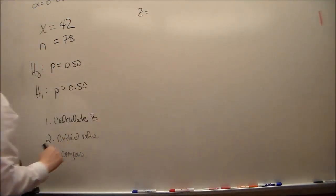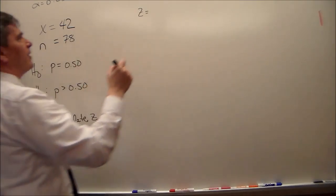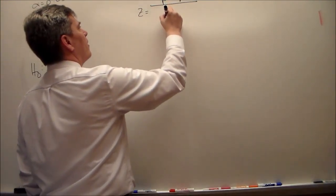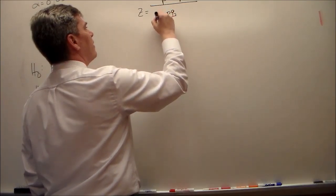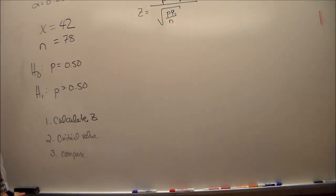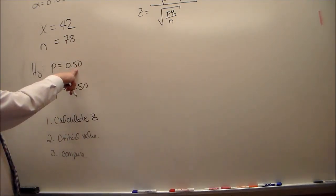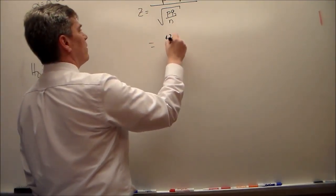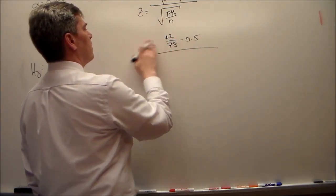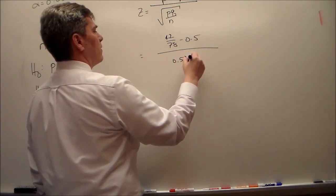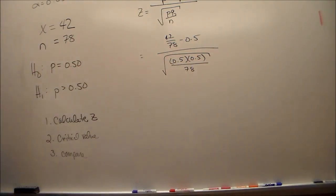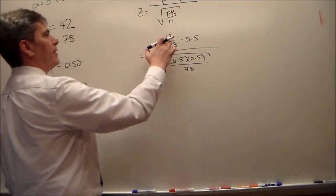From our notes we know z is equal to — this is proportion stuff — so this is going to equal p-hat minus p over the square root of p*q over n. Now we just plug and chug. p is equal to 0.5. p-hat is whatever 42 over 78 is. p is given to us as 1/2 — that's what we were hypothesizing. q is as always 1 minus p. And n is 42.